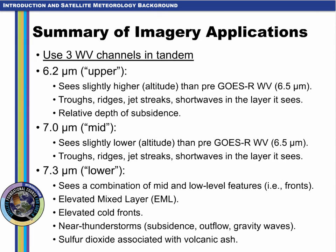In summary, GOES-R will offer three water vapor channels at greater spatial and temporal resolution compared to the current GOES imager water vapor channel. Be sure to utilize the three water vapor channels in tandem to provide a three-dimensional perspective of the atmosphere. The 6.2 and 7.0 micron channels see slightly higher and lower in altitude, respectively, compared to the current GOES water vapor channel. Keep in mind the layer that you're seeing when analyzing familiar features like troughs, ridges, and jet streaks. The 7.3 micron channel will offer a new perspective since it sees lower down into the atmosphere, where you can see low-level features such as fronts, outflow boundaries, and low-level clouds in combination with mid- and upper-level features. Always be aware of the layer that the sensor sees by making use of the weighting function profile information.